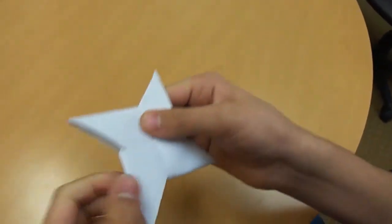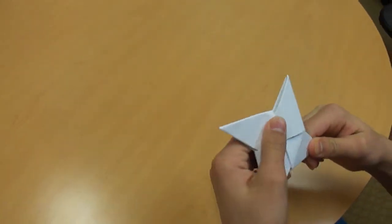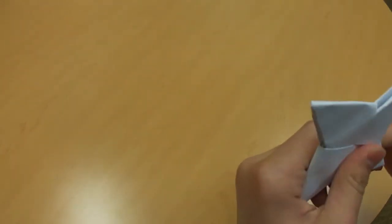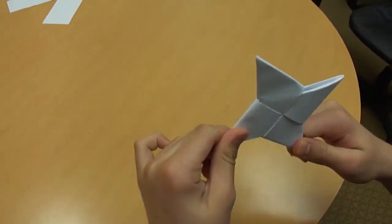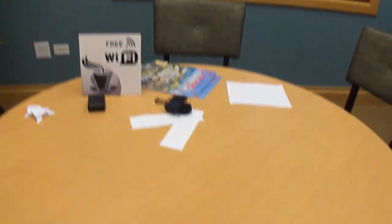See? This is called double-sided ninja star. It's really tough. It's really durable. So, this is how you throw it. Like, hold one side of it. Go like this and throw it. Something like that.